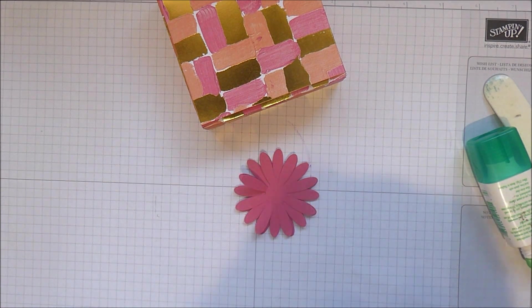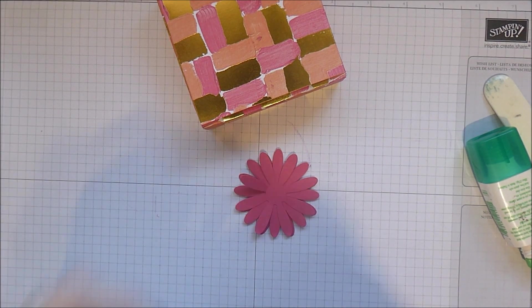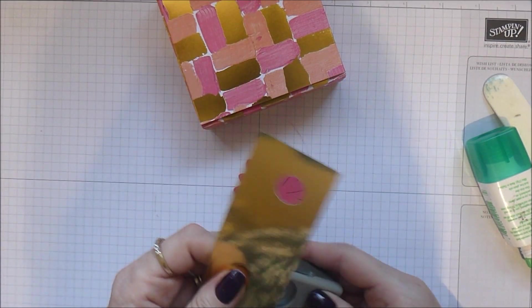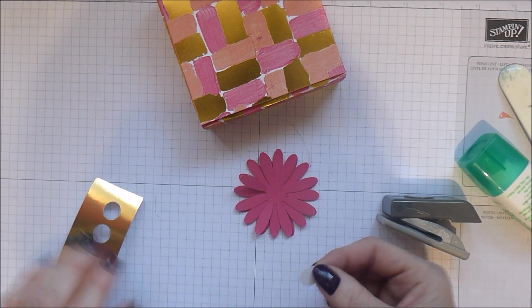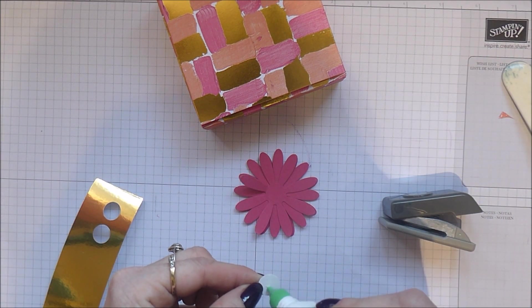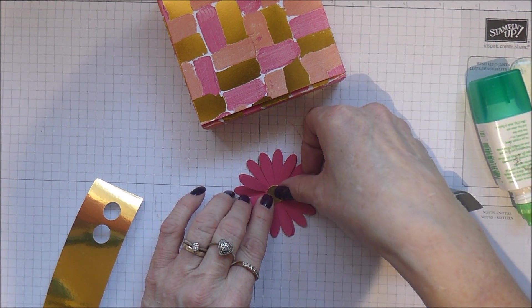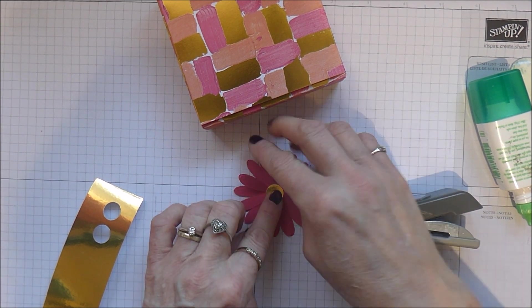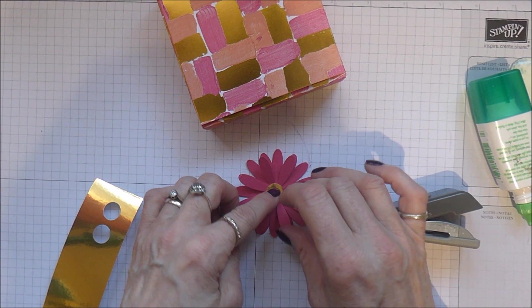I'm just going to let that set for a minute. So whilst that's setting. I've got here a little half inch punch. And I've got a little bit of gold foil card. So I'm just going to punch that out. I'm going to stick some glue on there. Pop that into the centre of my daisy. Start popping these up to give the flowers some dimension.